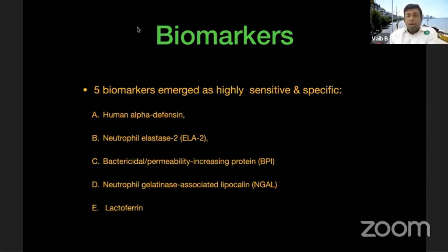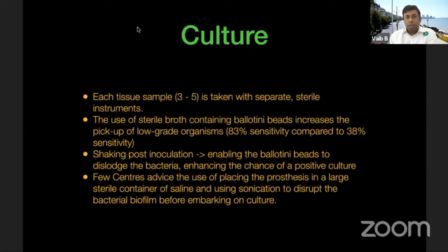Because many of these tests are not completely sensitive and specific, we have moved a step ahead to more sensitive and specific biomarkers. These include human alpha-defensin, ELA2, BPI, sNGL, and lactoferrin. These five peptides have shown to be more specific and sensitive, although they are expensive and not universally available.